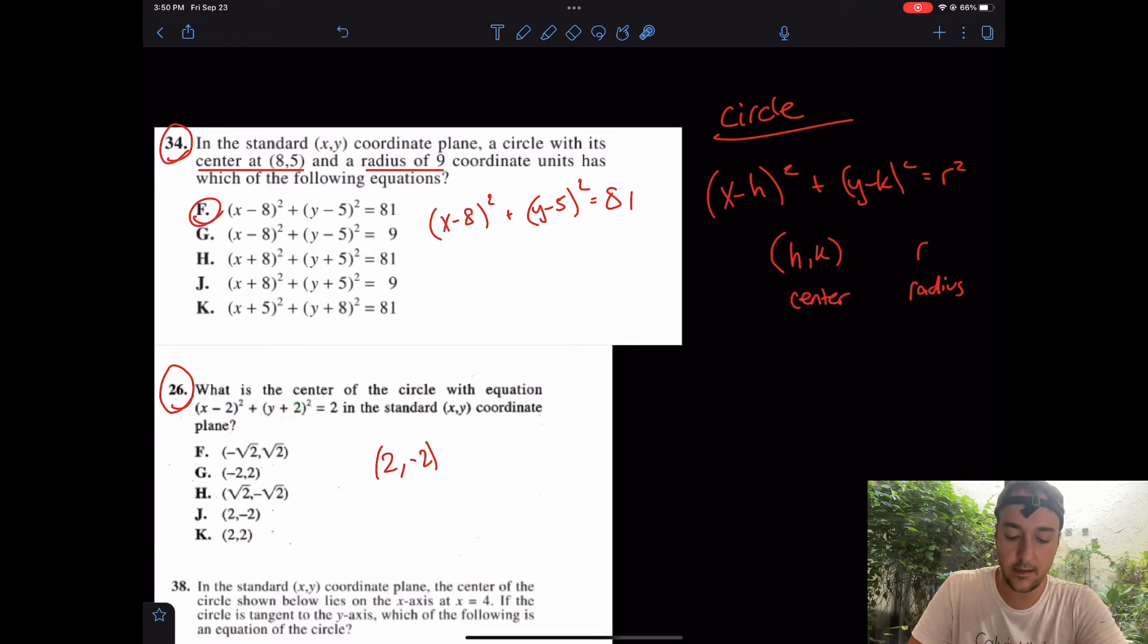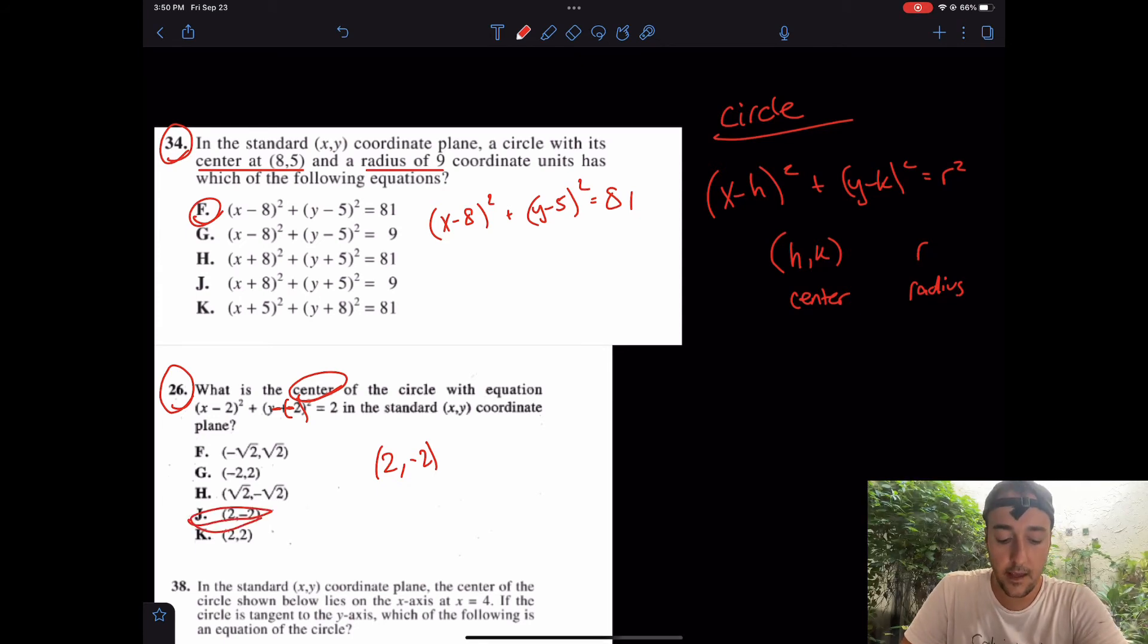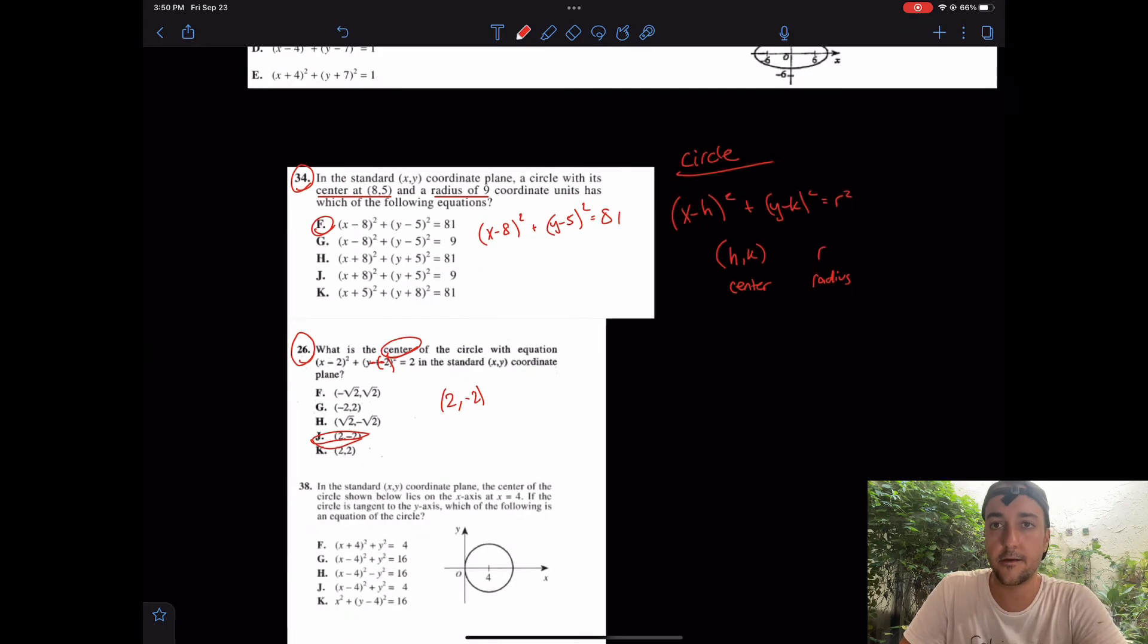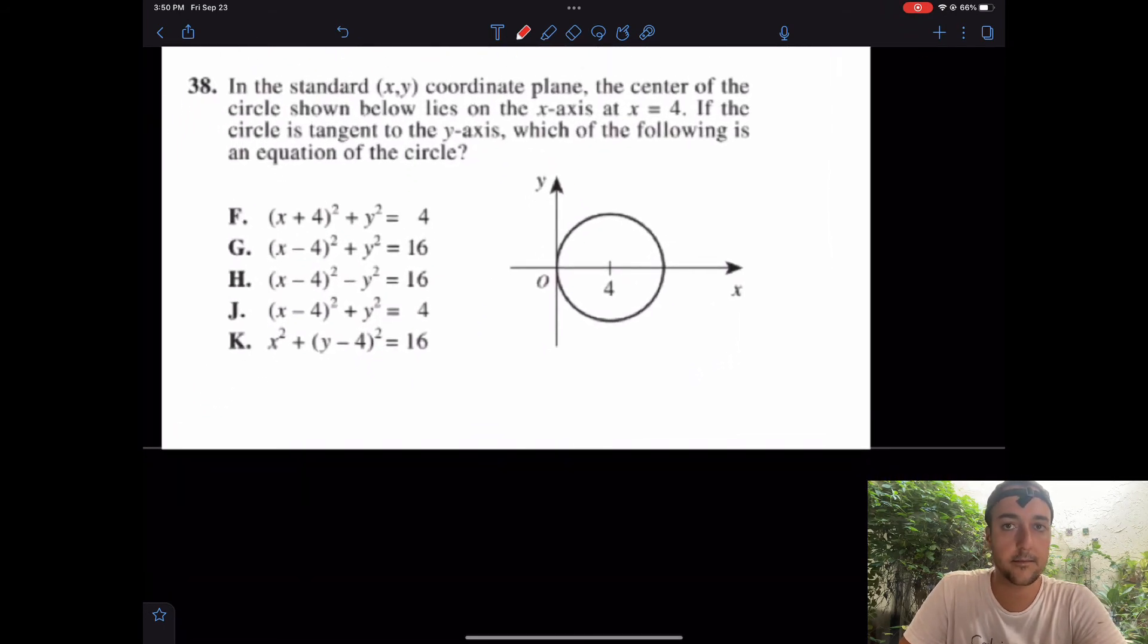A lot of students always ask me, wait a second, plus 2? Why is that negative 2? Well it's negative 2 because the formula already had a minus. So really, this plus is actually saying y minus negative 2. From there, what about the radius? Well, to be honest, I don't really care. It's not asking for it, right? In that case, the center would be (2,-2). I really like J here. Again, seconds.